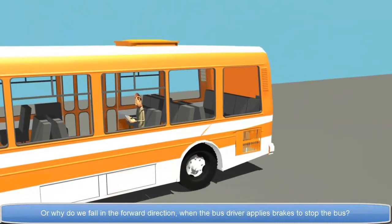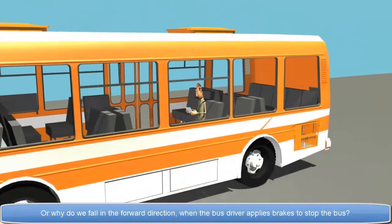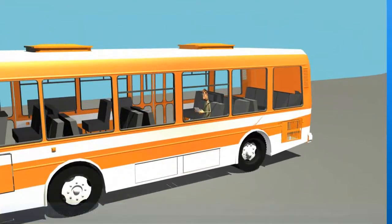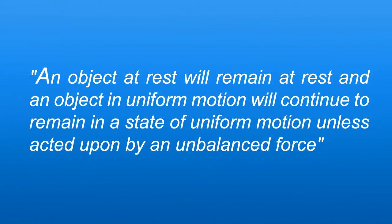Or why do we fall in the forward direction when the bus driver applies brakes to stop the bus? Well, Sir Isaac Newton gave his first law that states that an object at rest will remain at rest and an object in uniform motion will continue to remain in a state of uniform motion unless acted upon by an unbalanced force.